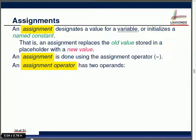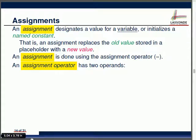An assignment operator has two operands — two parts, basically. We talked about operations being either unary or binary. An assignment is basically just another kind of binary operation. The syntax is really important, because for your lab test number one, if you get the syntax wrong, it's going to be bad.